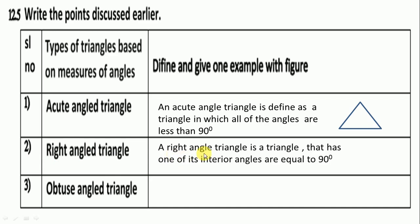A right angle triangle is a triangle that has one of its interior angles equal to 90 degrees, and here is the example.